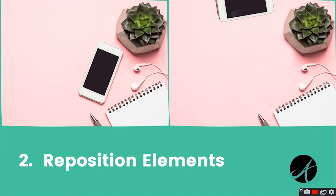The second point is to reposition elements on the screen. On the left image, you can see that the phone is bang in the middle of the picture. If I wanted to put text, it would be a bit hard to place it in the middle — there isn't really any space to work with apart from the left. So I went into Photoshop and moved the phone up a bit, creating space in the middle for me to then add any text I want.